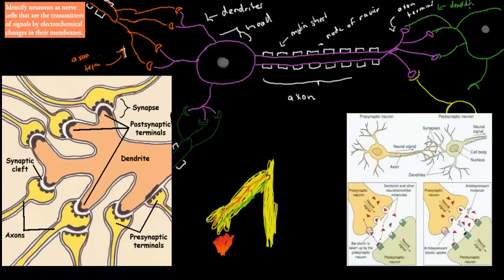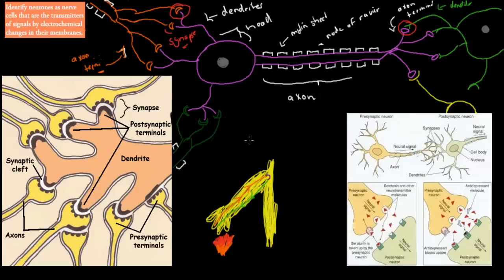Neurons are connected head to tail — axon terminals from one neuron always connect to the dendrites of another neuron, and that neuron's axon terminals connect to the dendrites of yet another. These structures are where signals are sent from one place to the next. This connection point is called the synapse — the synapse is the connection between two neurons, always with an axon terminal of one connecting to the dendrites of another.